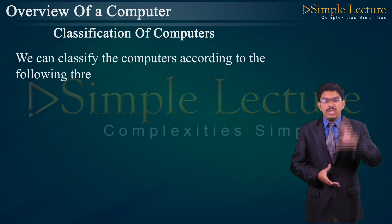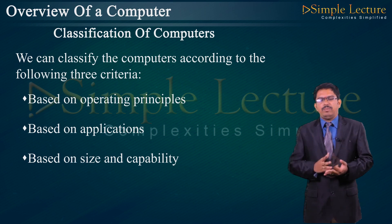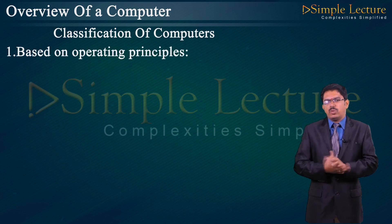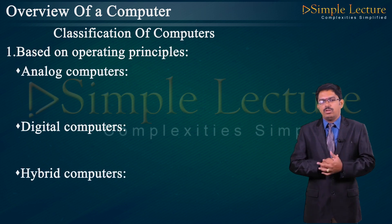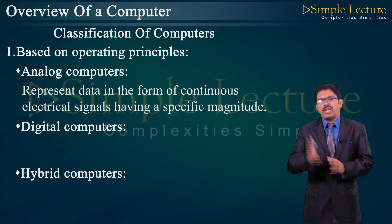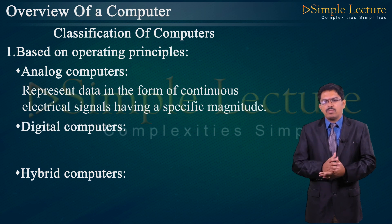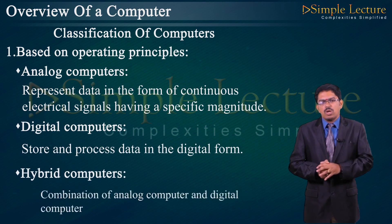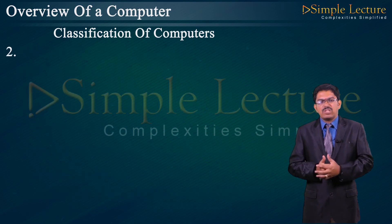Classification of computers: generally, a computer can be classified based on three criteria — based on operating principle, based on application, and based on size and capability. Based on operating principle, computers are classified into three major types: analog computer, digital computer, and hybrid computer. Analog computers represent data in the form of continuous electrical signals having a specific magnitude. Digital computers store and process data in digital form. Hybrid computers are a combination of analog and digital.